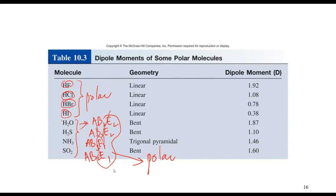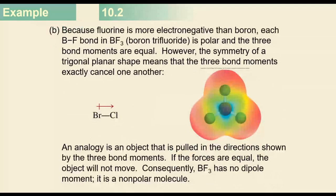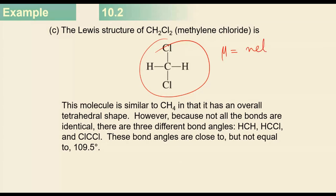Let's check some examples: BrCl — is it polar or nonpolar? It is polar, since bromine and chlorine are different atoms. CH2Cl2 — is it polar or nonpolar? It is polar. Since it is polar, its dipole moment will be a net dipole moment.